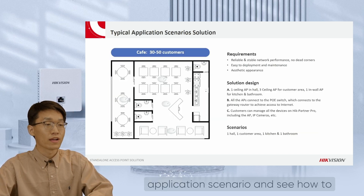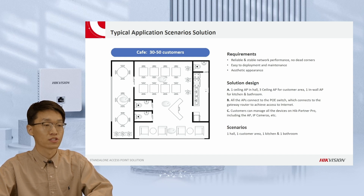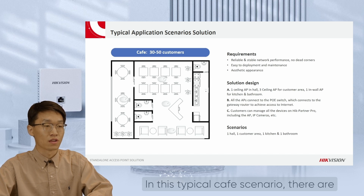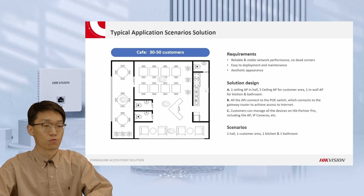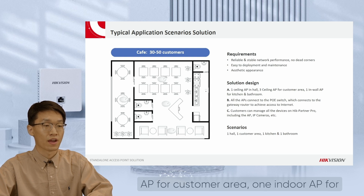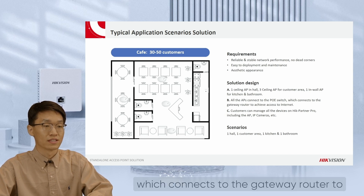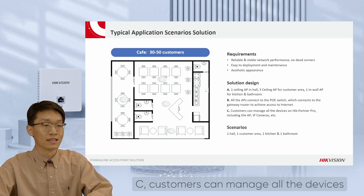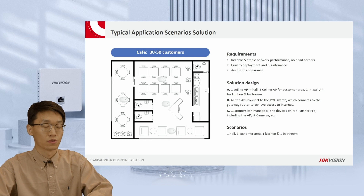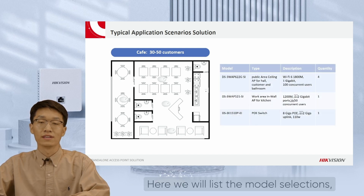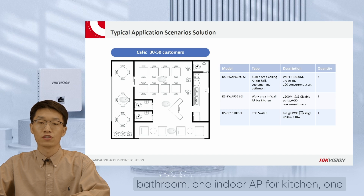Let's check a typical application scenario and see how to select our AP products. In this typical cafe scenario, there is one hall, one customer area, one kitchen, and one bathroom. The solution design is: A — one ceiling AP in the hall, three ceiling APs for the customer area, one in-wall AP for the kitchen and bathroom; B — all APs connect to the PoE switch, which connects to the gateway router to achieve internet access; C — customers can manage all devices on HackPartner Pro, including APs, IP cameras, switches, etc. Model selections: four ceiling APs for the public area including hall, customer area and bathroom; one in-wall AP for the kitchen; one smart managed PoE switch for connecting and powering all APs.